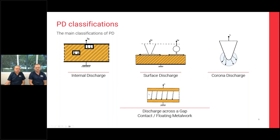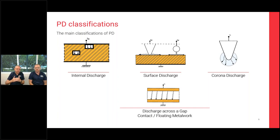When we go to a discharge across a gap, it's like a capacitor firing at the same amplitude every single time — it will build up and fire, build up and fire. This produces a very different type of pattern compared to internal discharge, which we'll see going forward.